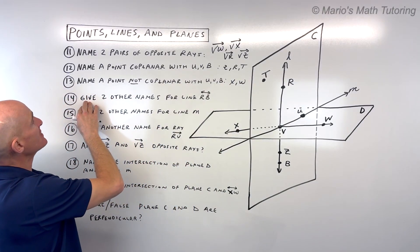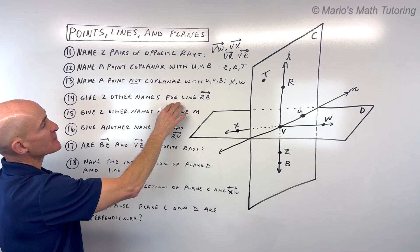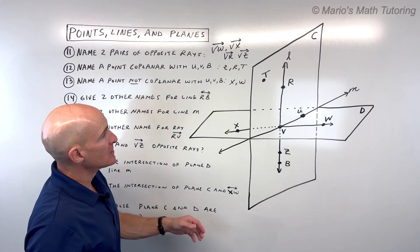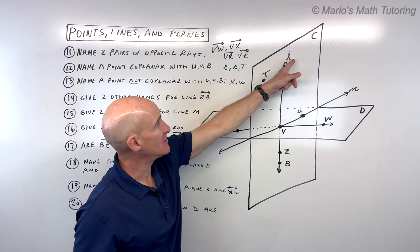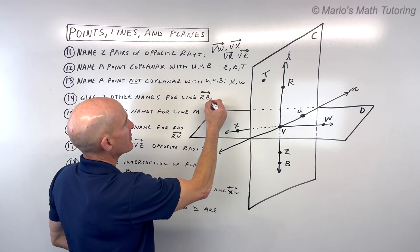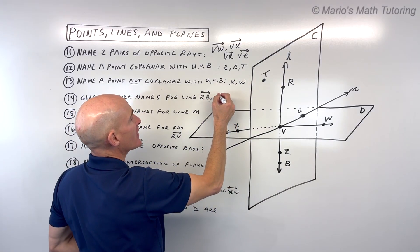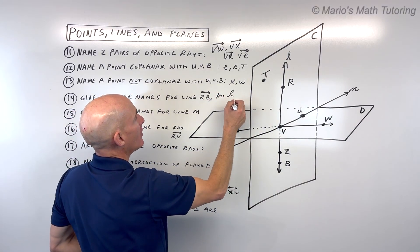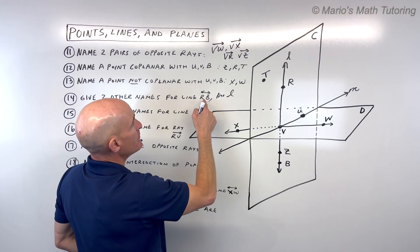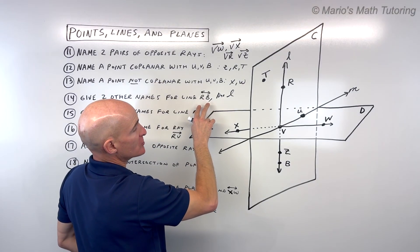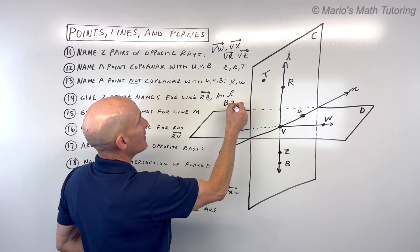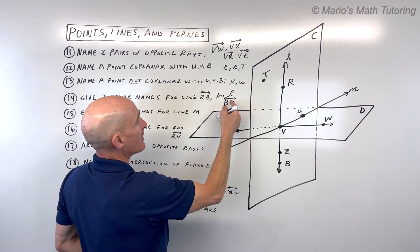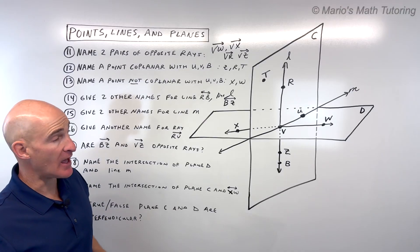For number 14, give two other names for line RB. Here's line RB. Another name, you could use this cursive letter, line L. Or we could call it BR, you can change the order of the two points. Or BZ. Any two points on the line will work. Just make sure you draw that line symbol above it to indicate it's a line and not a segment.